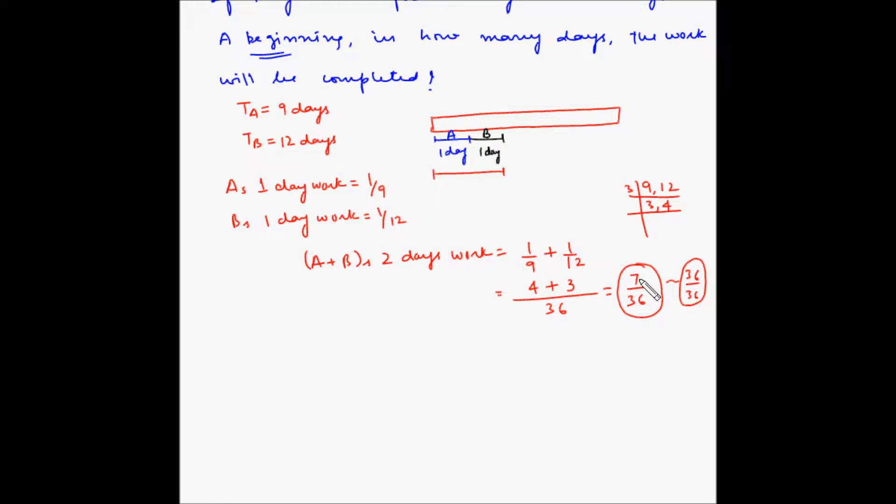Approximately, seven fives are 35. So we will need five two-day periods of work from A plus B. Total 10 days work by A plus B will be equal to 5 multiplied by 7/36. I used 5 because this is two days work and we are taking five pairs—that means five times the two days work.